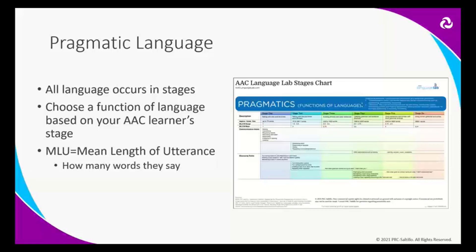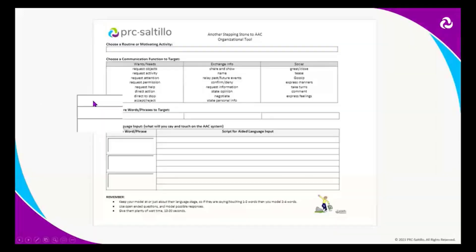This is definitely not meant to be a prerequisite, but it gives you a reference point. When talking about functions of language, we want to move beyond just requesting things — that's where tonight's session will address different functions we can target. So you can refer back to these to help get you moving in a different direction. When using the organizational tool, you pick out your activity — which we did with reading a book — and then think about which functions of communication you could target.